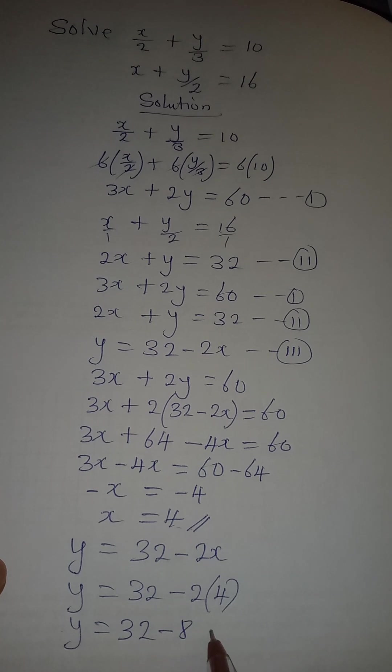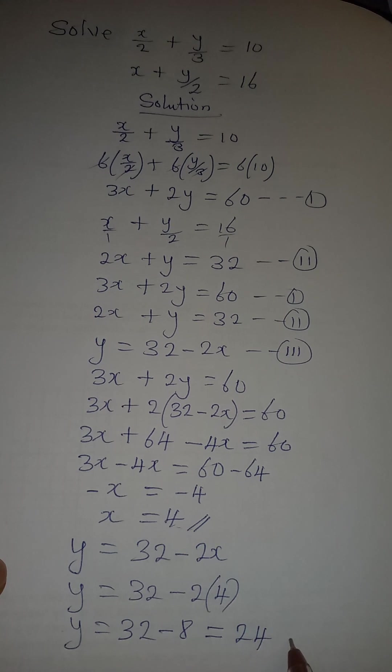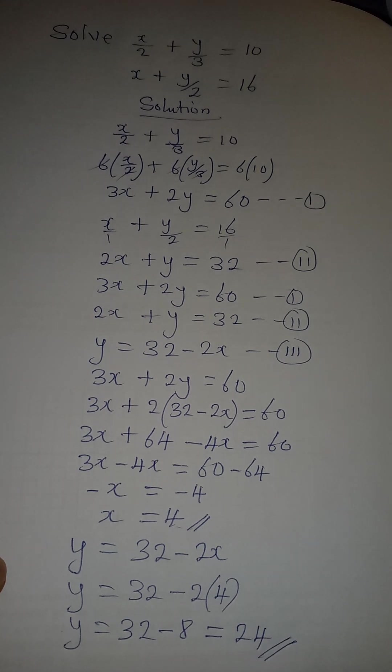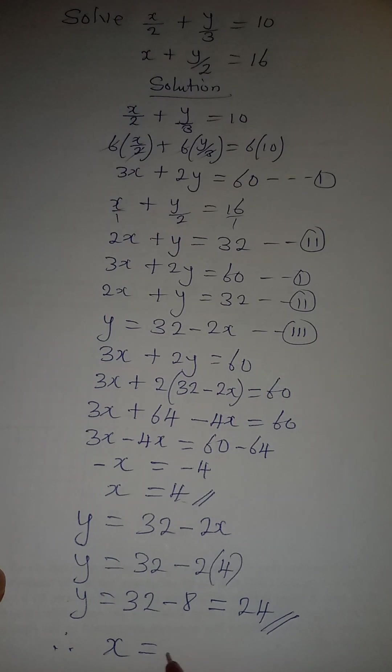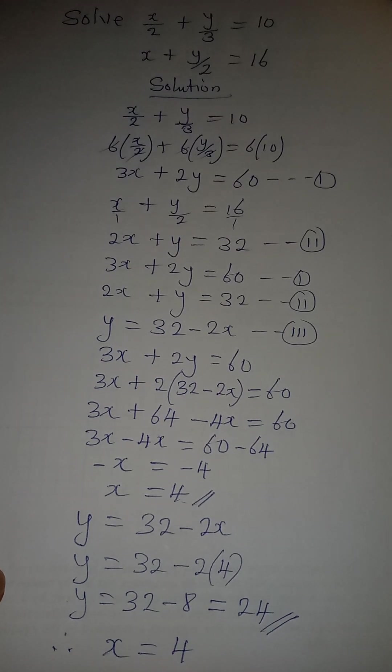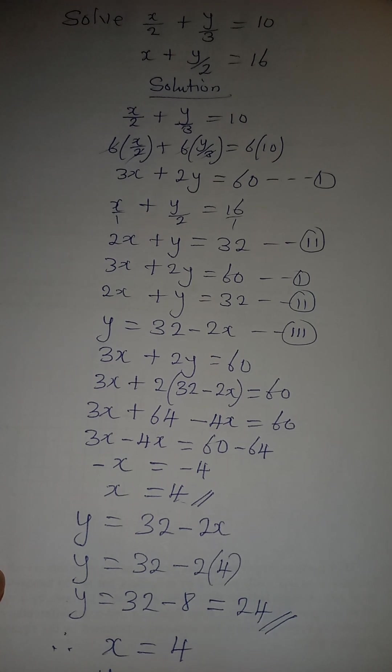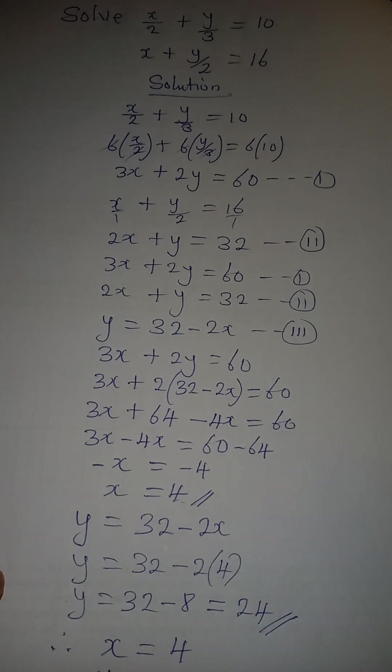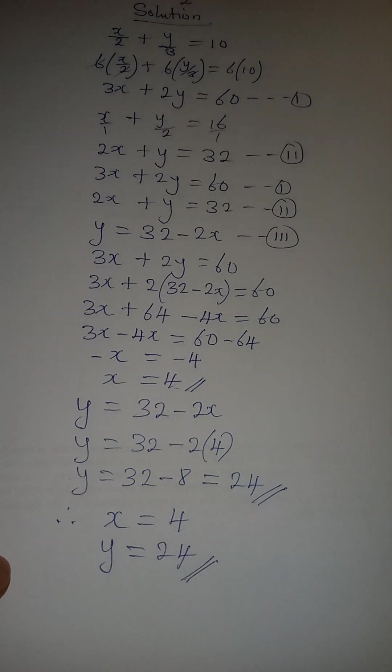And it is equal to 24. So we've known the value for x and y. So therefore, x is equal to 4 and y is equal to 24. So you can put this back into the equation and check whether we are right or wrong. Thank you for watching, God bless you.